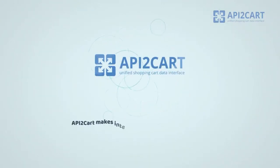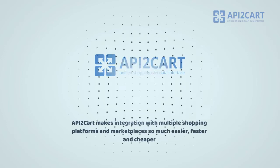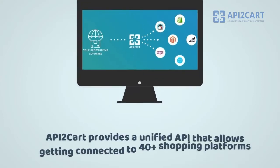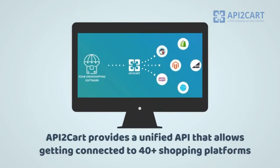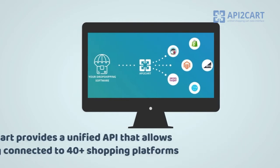API2Cart makes integration with multiple shopping platforms and marketplaces so much easier, faster, and cheaper. API2Cart provides a unified API that allows dropshipping automation systems to get connected to 40-plus shopping platforms and marketplaces easily.